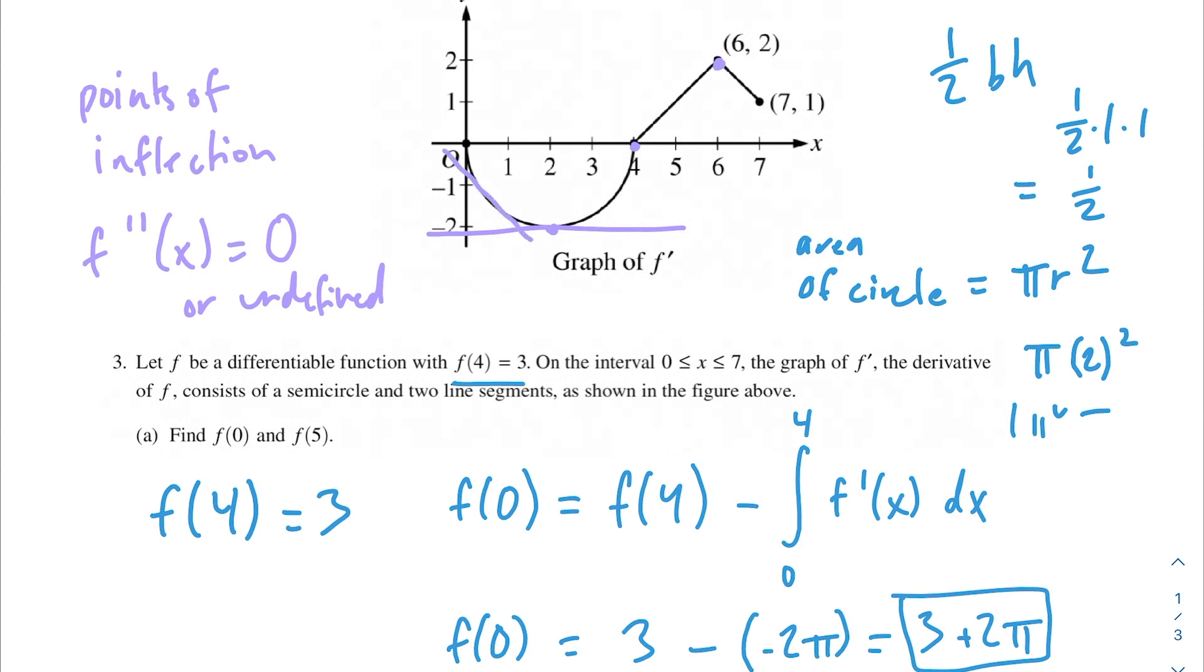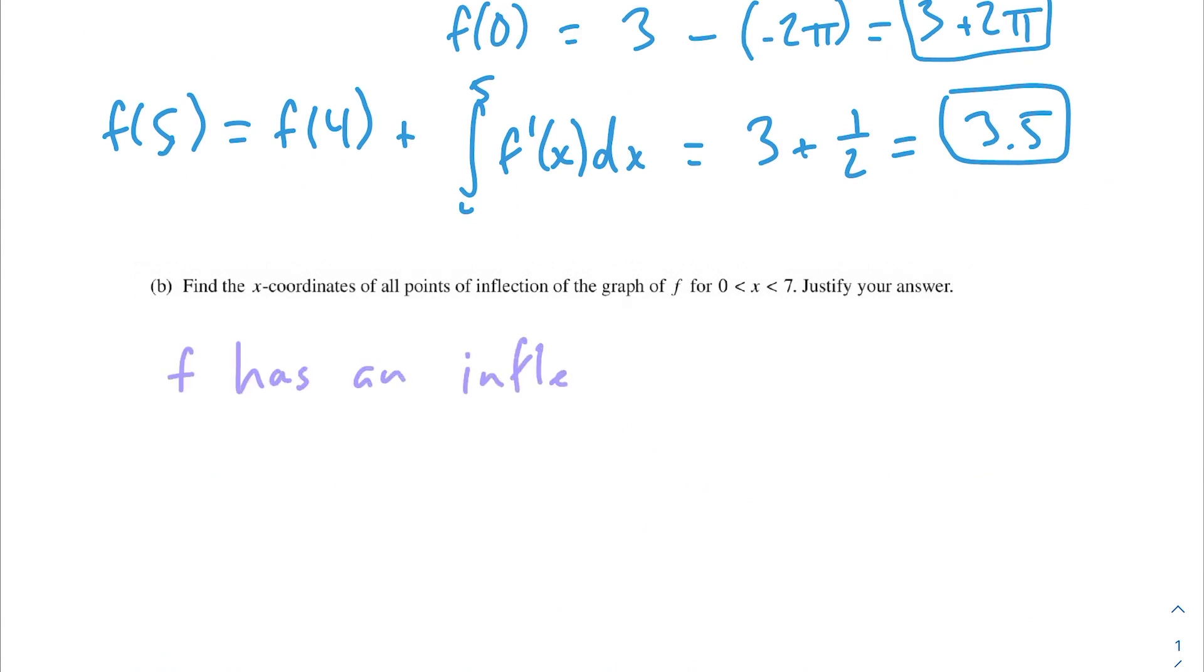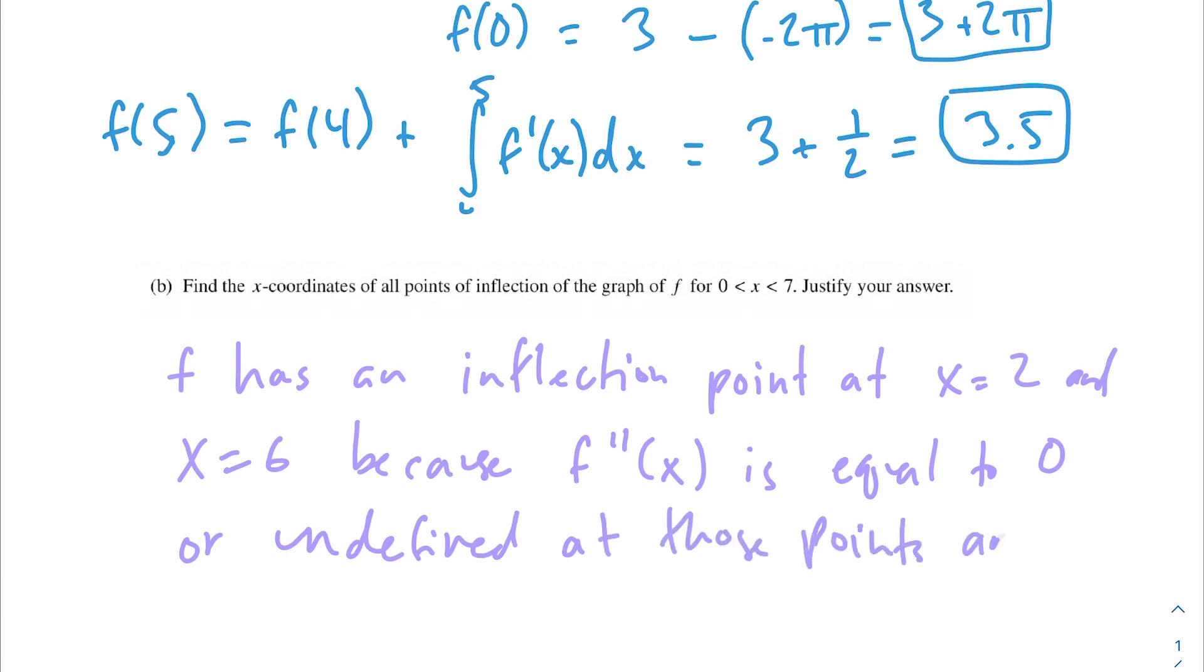Not only does f''(x) need to be 0 or undefined, but also f prime of x needs to change from decreasing to increasing or increasing to decreasing. At this point, you can see it's changing from decreasing to increasing. At 4, it looks like it goes from increasing to increasing, so it doesn't change sides, so we can't say that's an actual point of inflection. And at x = 6, we can see it's increasing to decreasing, so this would also be a point of inflection.